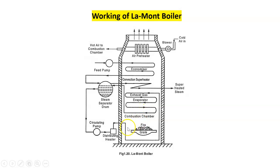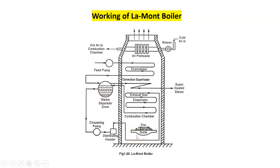With the basic components, we have a steam separator drum, circulating pump, and distribution header. We have a grate where combustion of coal is taking place. We have the combustion chamber, evaporator, convection superheater, economizer, and air preheater. We have a blower, where the hot air is going to the compressor, and a feed pump which circulates the water. These components are very much familiar to the students.